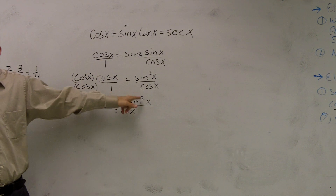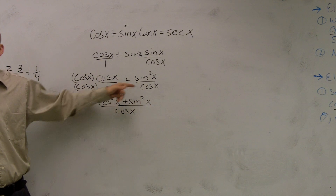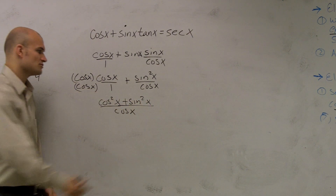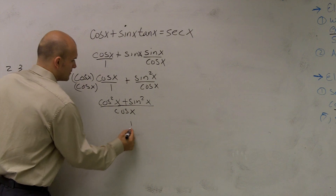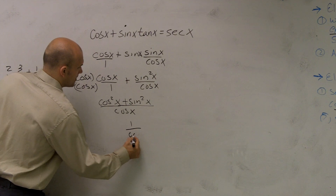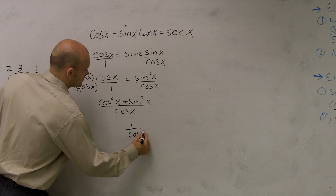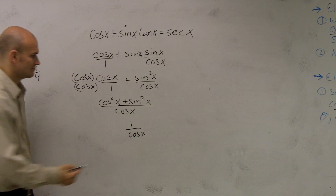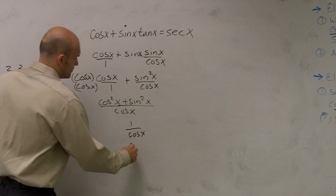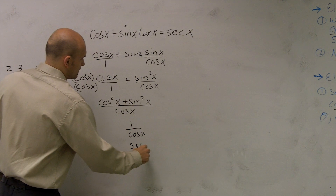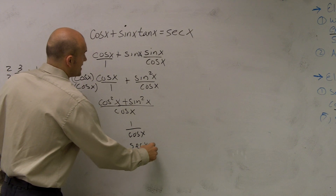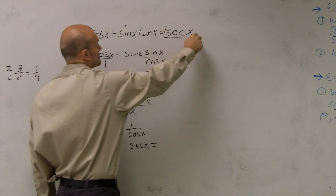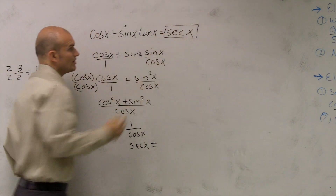Now, cosine squared plus sine squared is the Pythagorean identity, which equals 1. So we get 1 over cosine, which equals secant of x — which obviously equals our right-hand side.